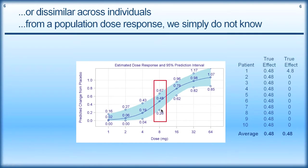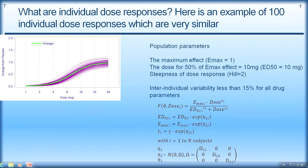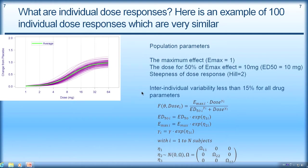This doesn't tell us anything about individuals. So what are individual dose responses? Here is an example of 100 individual dose responses which are very similar — 100 purple curves each representing one individual. These curves were generated with a maximum effect around 1, an ED50 around 10, and a hill coefficient of 2. The reason these curves look quite similar is that the individual variability in these parameters is less than 15%, meaning patients all have similar Emax, ED50, and hill coefficients.